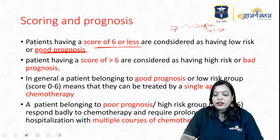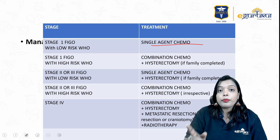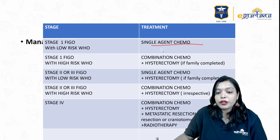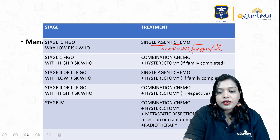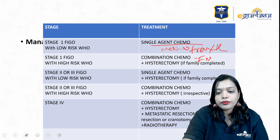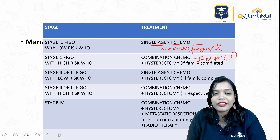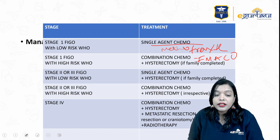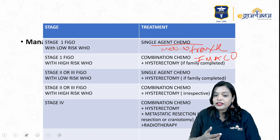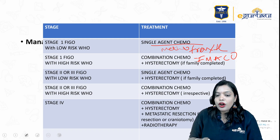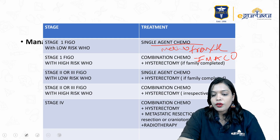Stage 1 low risk: single agent chemotherapy. Stage 1 high risk: combination chemotherapy. Single agent chemotherapy is methotrexate. Combination chemotherapy is EMACO — etoposide, methotrexate, actinomycin, cyclophosphamide, and vincristine (Oncovin). Hysterectomy is for family-completed patients. Stage 2 or 3 with low risk: again single agent chemo. Stage 2 and 3 high risk: combination chemo. Stage 4: combination chemo plus hysterectomy or metastatic resection and radiotherapy.